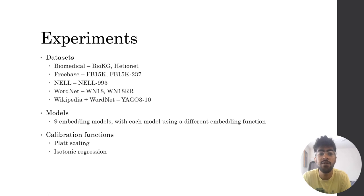For our experiments, we use datasets from several different sources, such as biomedical datasets, Freebase, WordNet, and Wikipedia. For our models, we use nine embedding models, each with different embedding functions. And finally, for our calibration function, we use two calibration functions called Platt scaling and isotonic regression.